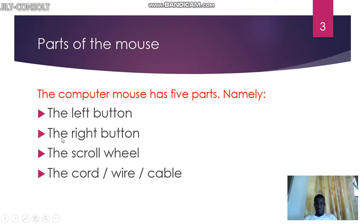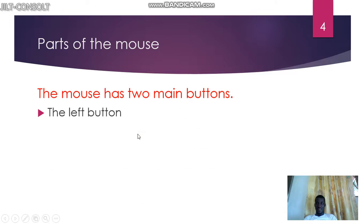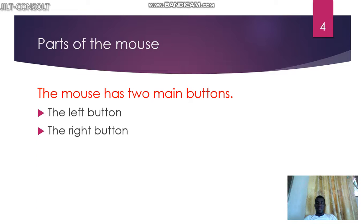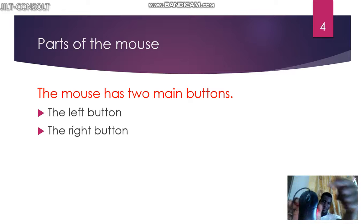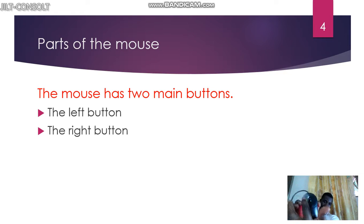The mouse has two main buttons: the left button and the right button. The left button is here and the right button is here. The mouse has two main buttons used for clicking.